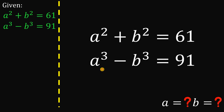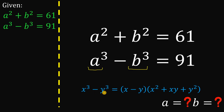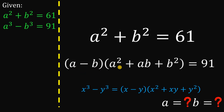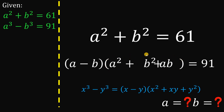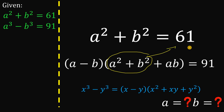We will use the fact that we can factor a cubed minus b cubed. Using the identity: x cubed minus y cubed equals x minus y, multiplied by x squared plus xy plus y squared. So a cubed minus b cubed factors as a minus b, multiplied by a squared plus ab plus b squared. Notice we have a squared and b squared here, so let's rearrange terms. We know the value of a squared plus b squared, which is given as 61, so we can replace it with 61.